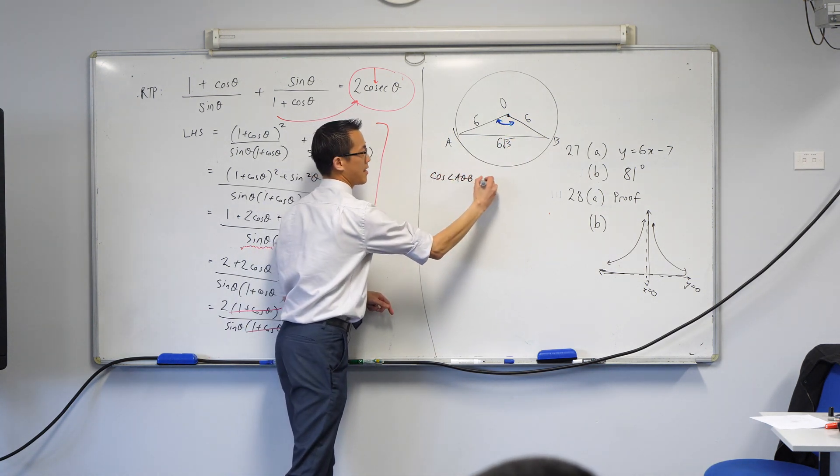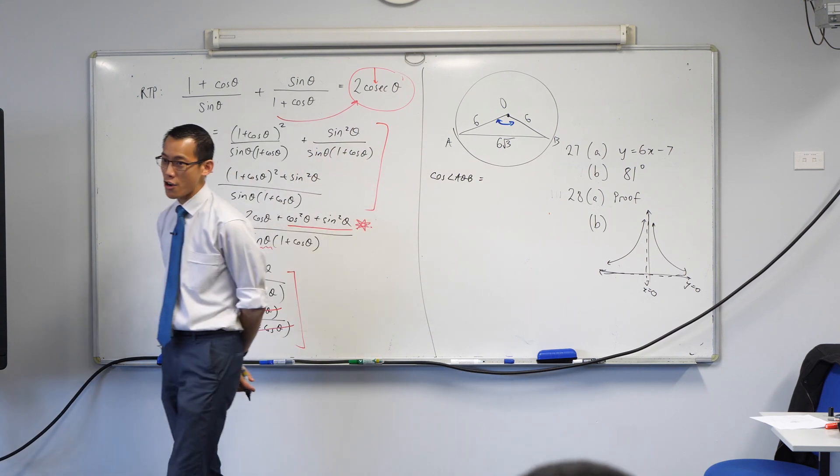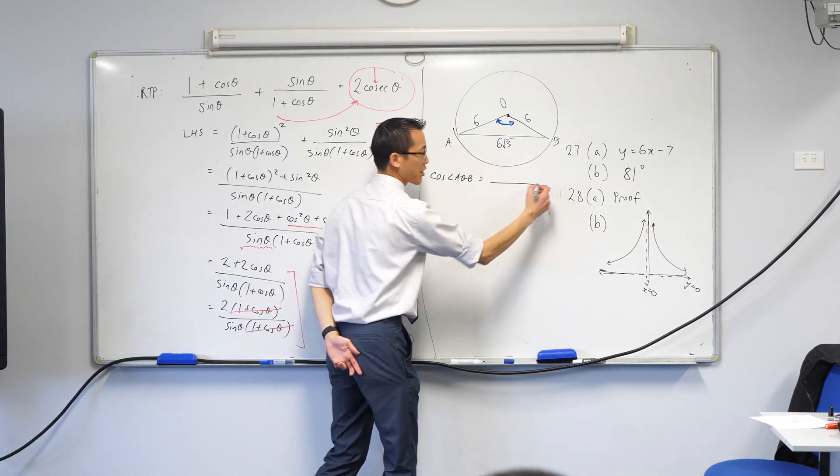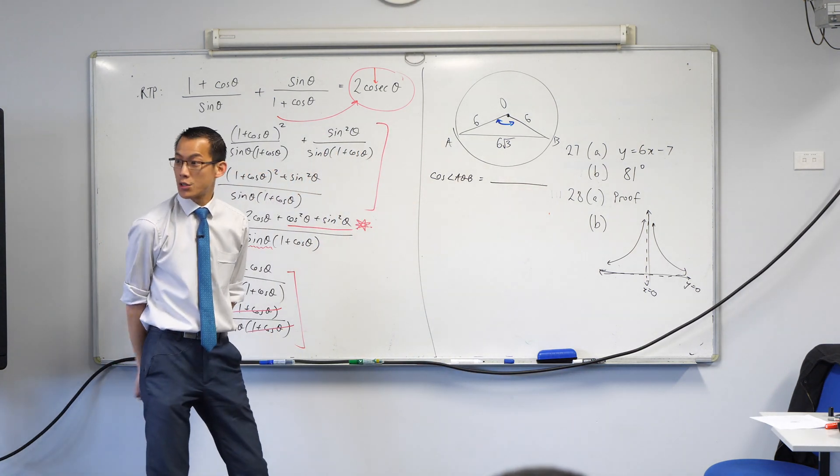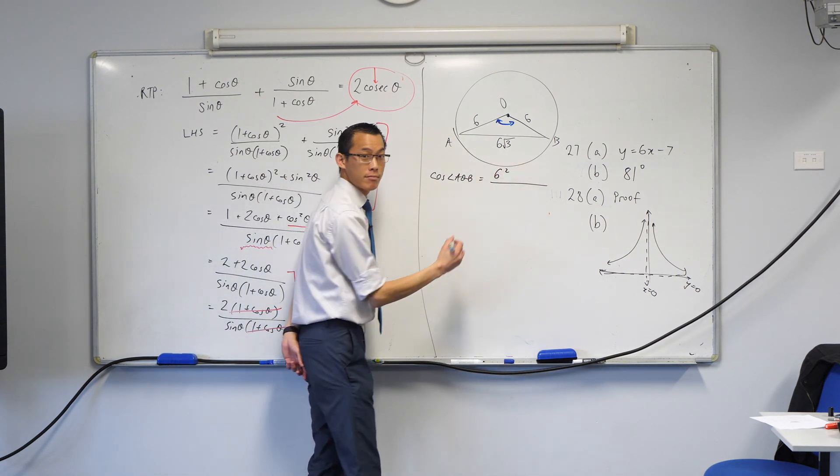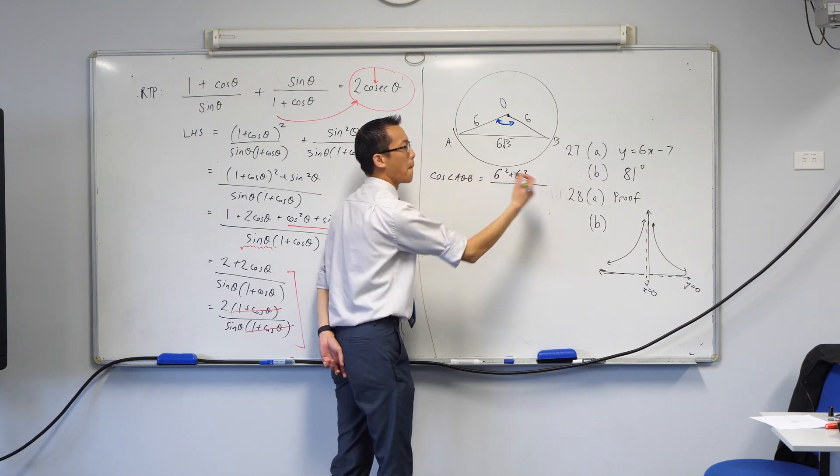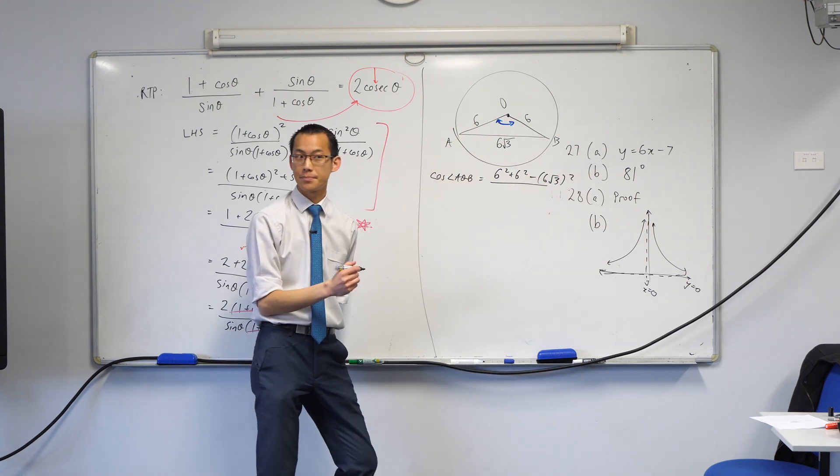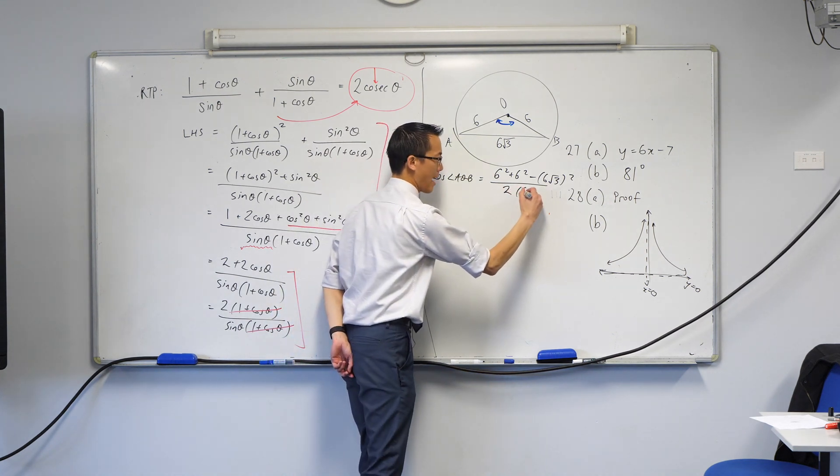So I'm going to write cos of AOB, right? Now you have the cosine rule on your reference sheet. This is the one where you've got a fraction on the right-hand side. So I'm going to start to put in the pieces. There's going to be an A squared plus B squared minus C squared divided by what? 2AB.